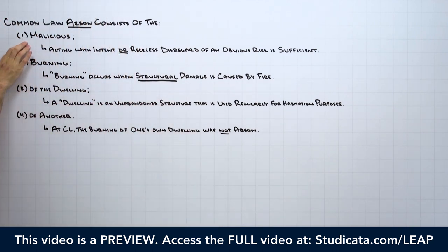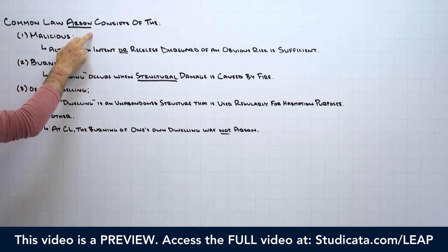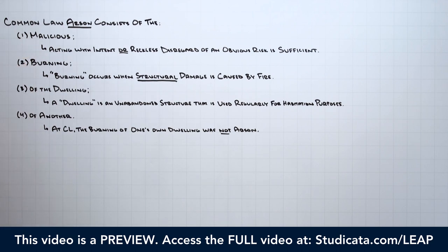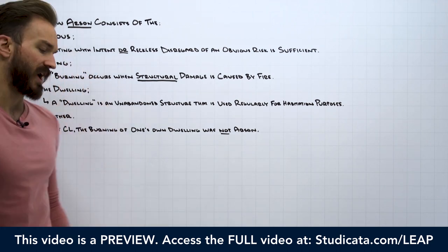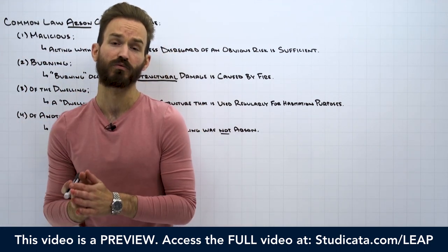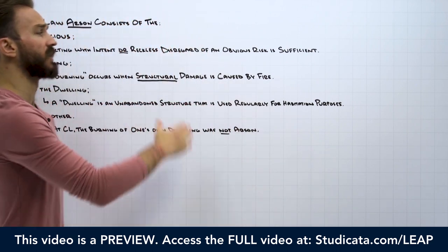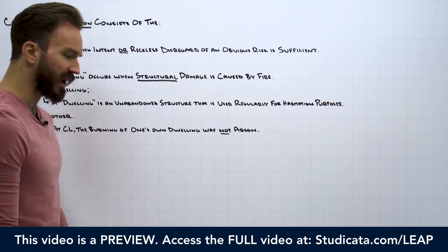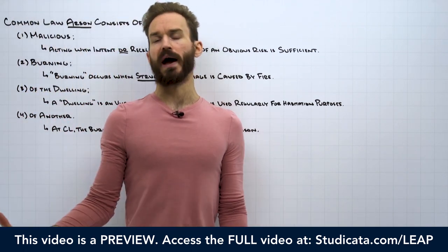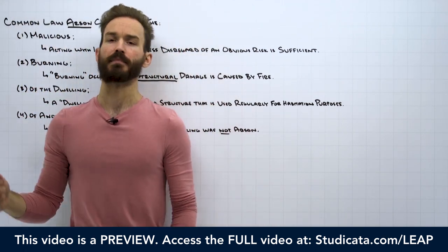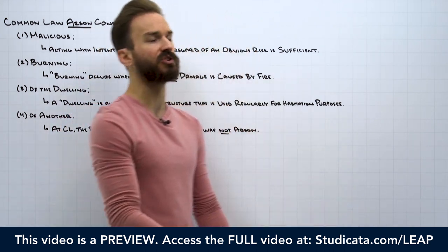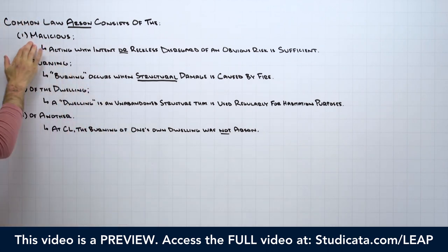And this is summed up in our first element. We say common law arson consists of the malicious burning. When we say malicious, we just mean that either the burning is done with intent or with a reckless disregard of an obvious risk. So intentionally burning something is obvious. This is where you would go to a house with lighter fluid and a match. You douse the whole house in lighter fluid and then you drop the match. That is malicious. That's acting with intent to burn.